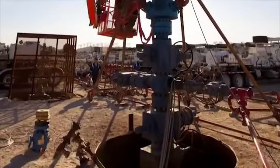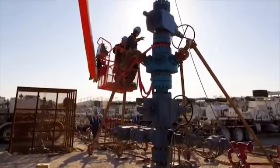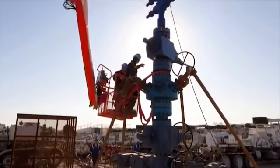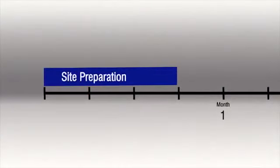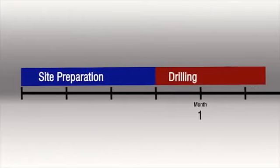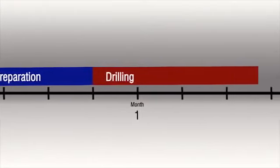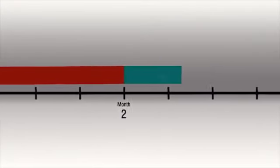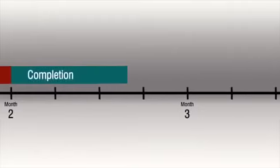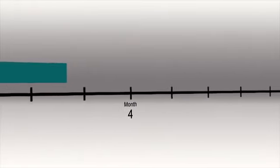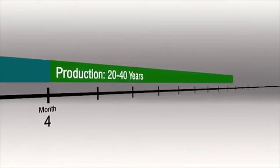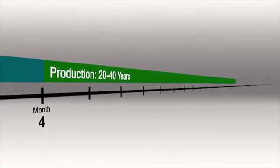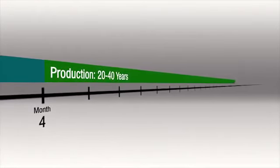The whole process of developing a well typically takes from three to five months: a few weeks to prepare the site, four to six weeks to drill the well, and then one to three months of completion activities, which includes one to seven days of stimulation. But this three to five month investment can result in a well that will produce oil or natural gas for 20 to 40 years or more.